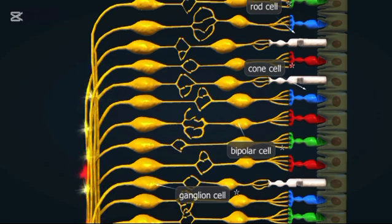The lens is a clear, flexible structure behind the iris. It helps focus light onto the retina for clear vision. The ciliary zonules are tiny fibers that connect the lens to the ciliary body.